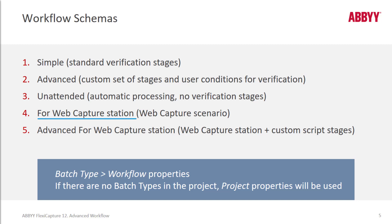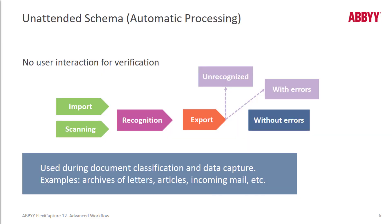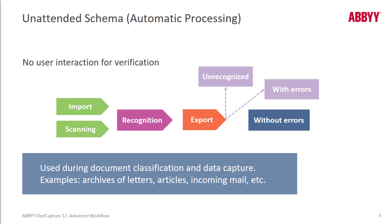There are also a couple of other stages for web capture station. The unattended schema allows you to export without any verification stage, but then it's important to set up some exports. You want to set up an export for documents without errors, which is done at the export setup stage. You have the ability with a drop list to select exporting documents without errors or with errors. You'll want to set up at least two exports: one for documents without errors, and one to export documents with errors to another location. To handle documents that are unrecognized at the batch type level, there's an export tab where you can configure the routing of unrecognized documents.